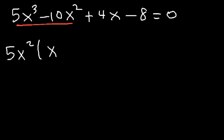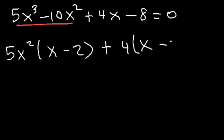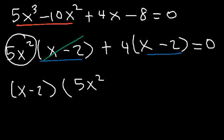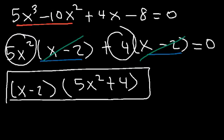In the first two terms, take out the GCF, which is 5x squared. 5x cubed divided by 5x squared is x, and negative 10x squared divided by 5x squared is negative 2. In the last two terms, take out 4. 4x divided by 4 is x, and negative 8 divided by 4 is negative 2. Now factor out x minus 2, leaving 5x squared from the first group and plus 4 from the second. So the final answer is x minus 2 times 5x squared plus 4.